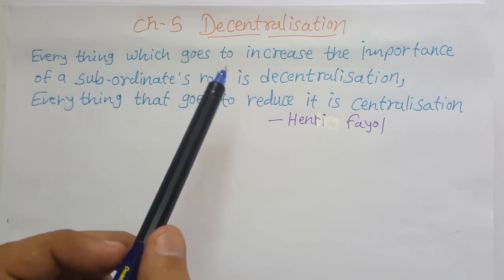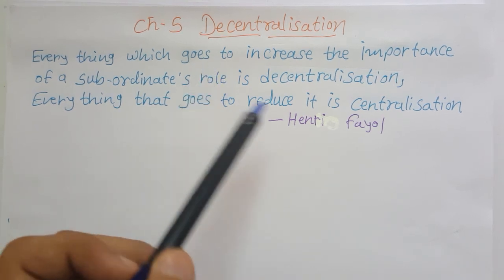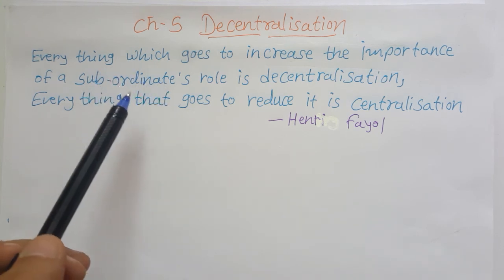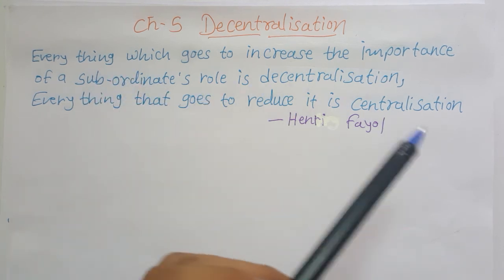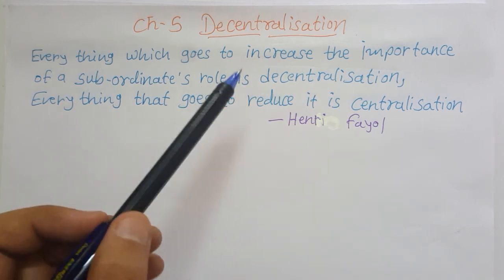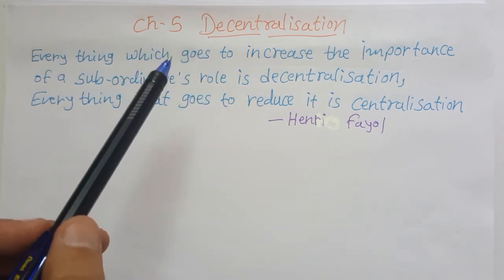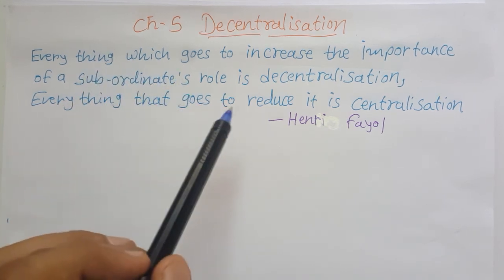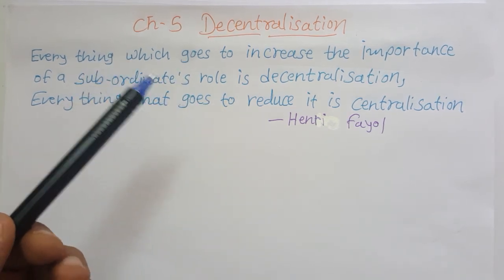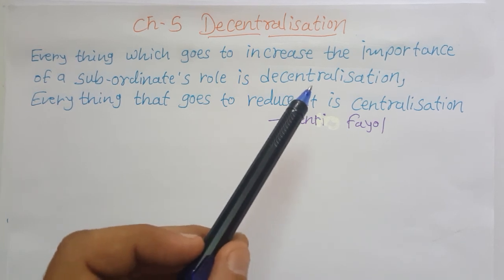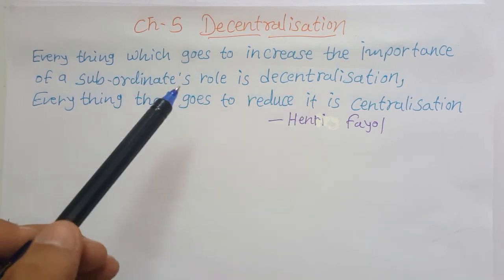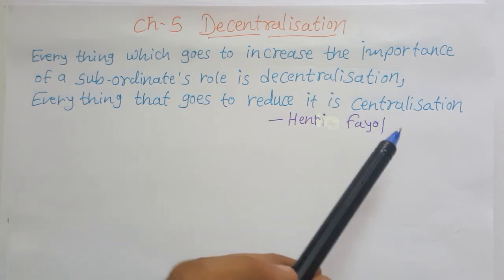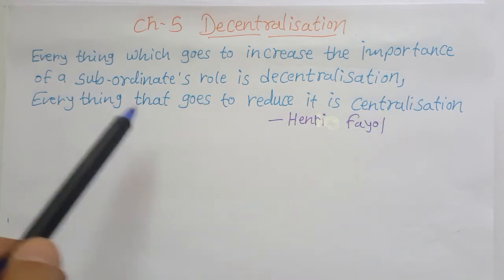So we can understand here: if we are increasing the role of subordinate, it is decentralization. When we are decreasing the role of subordinate, this is centralization. The meaning of importance here is decision-taking power or decision-taking authority. If we are giving authority to subordinates, we are a decentralized organization. If top management is keeping it with them, it is called a centralized organization.